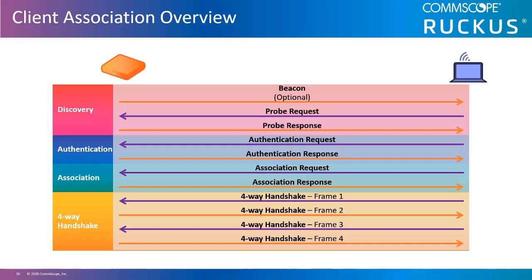Here we have an overview of the messages exchanged between a station and an access point used to complete an association. They are broken up into four phases: discovery, authentication, association, and four-way handshake. The discovery process consists of probe requests and probe responses between stations and access points. It may also leverage a very important frame called the beacon.